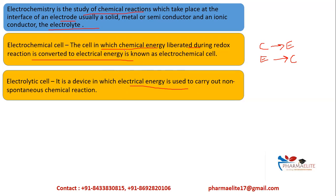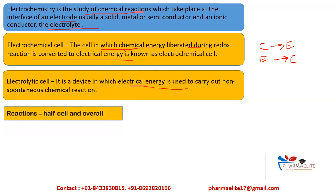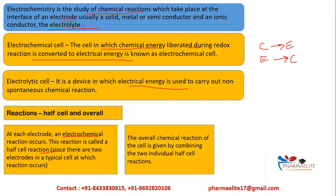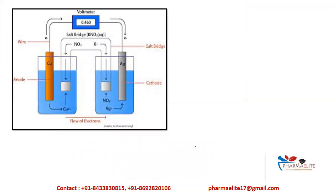Another cell you must have commonly heard of is the galvanic cell. In electrochemistry, you also have half-cell reactions and overall full reactions. At each electrode, an electrochemical reaction occurs — this is called a half-cell reaction. When you combine the reactions of both individual half-cells — right and left — you get the overall reaction.